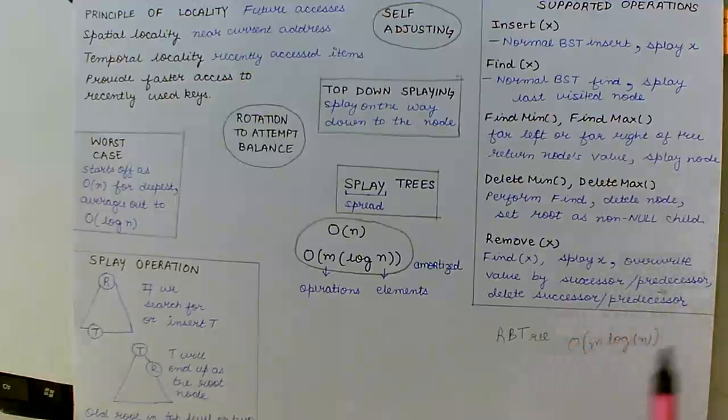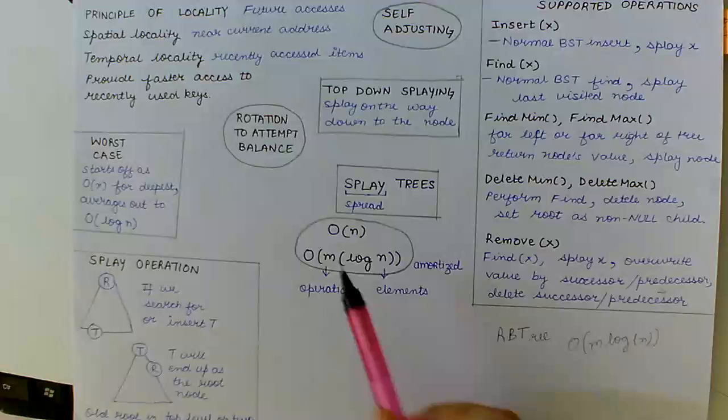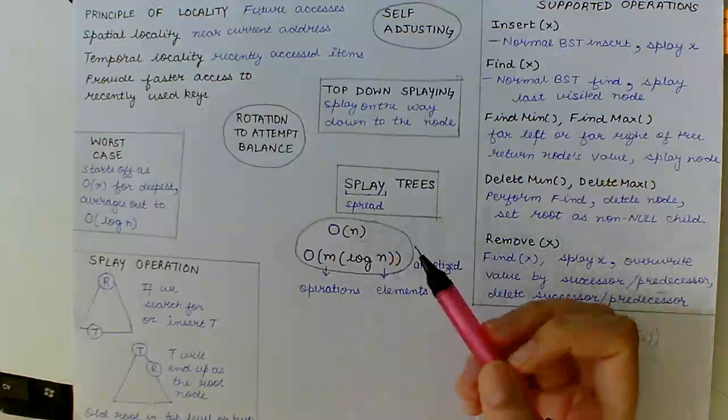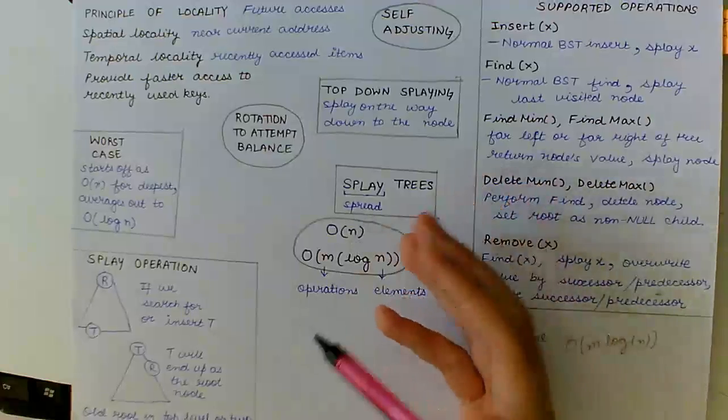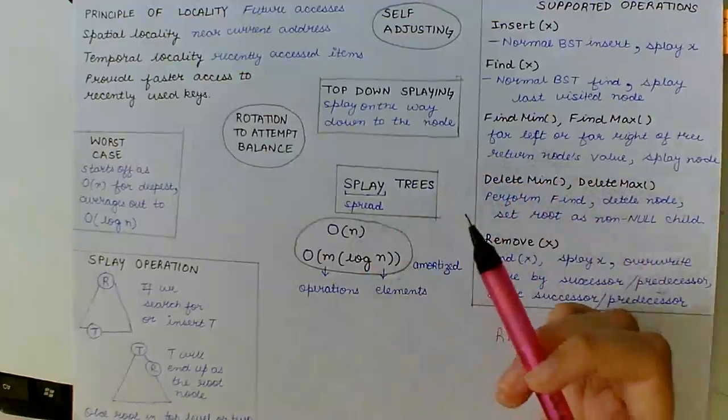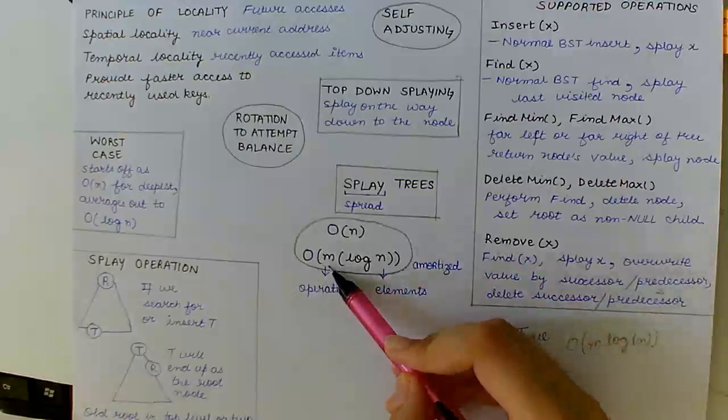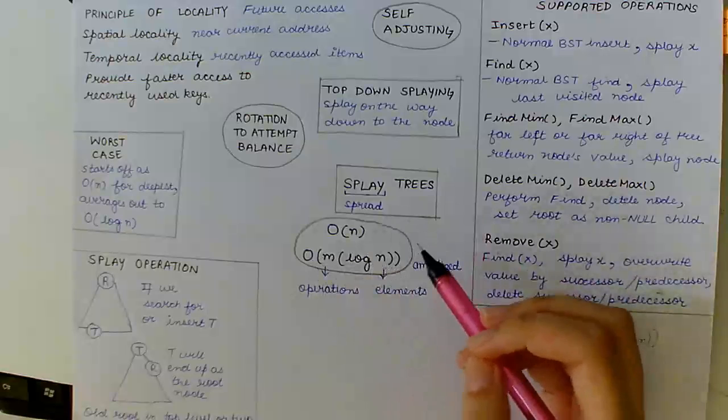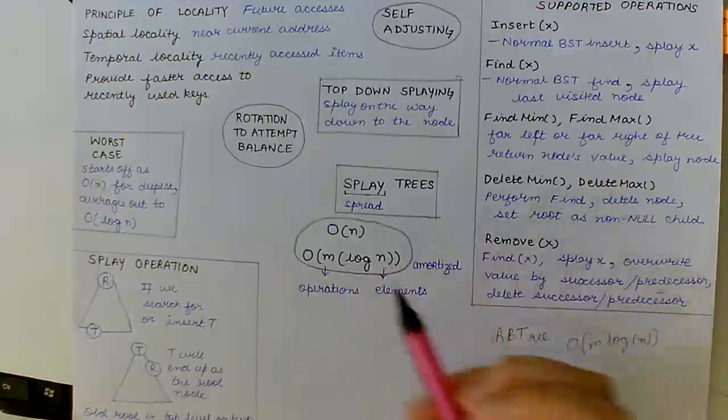In the case of splay trees, the worst case scenario is O(n). However, splay trees guarantee that if you do m operations on the splay tree with n elements, the total amortized cost comes out to be O(m log n).